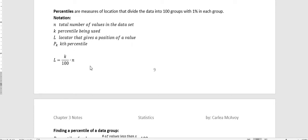And this is a formula that we'll be using to find the location of a particular piece of data. We take the percentile, divide by 100, and then multiply by the number of values in the data set. So it's a very simple calculation.